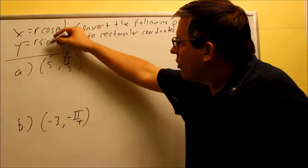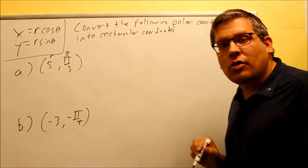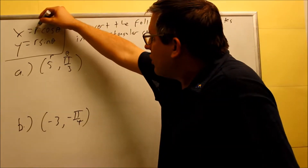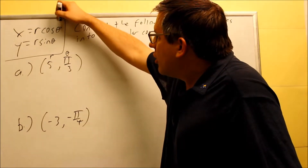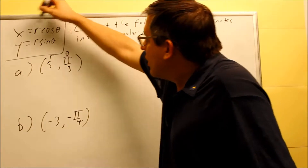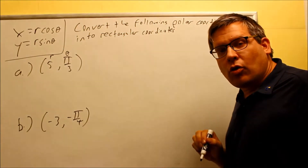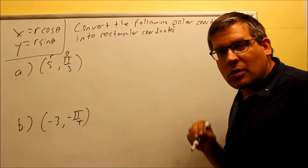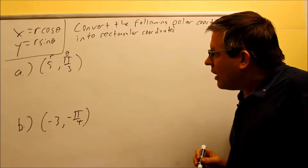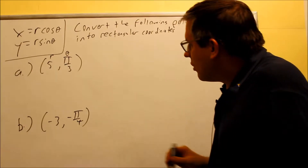These formulas will allow me to do so. They allow me to take the given r and theta, put it in, and that's going to automatically give me the x and the y coordinate, and I'll just write them as a coordinate at the end.